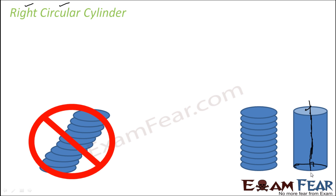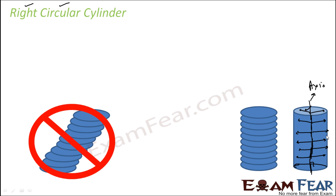The right circular cylinder can also be defined as a 3D surface formed by the points at a fixed distance from a given line segment — this line segment is called the axis. So if you take this line segment and draw all the points which are at a fixed distance R from it, all these points together form a cylinder.